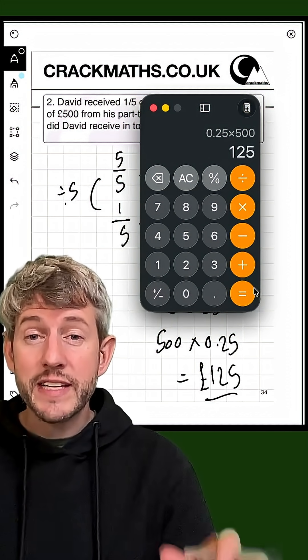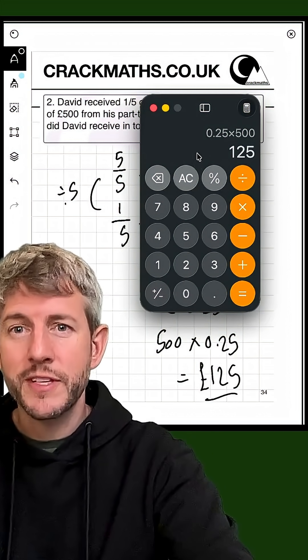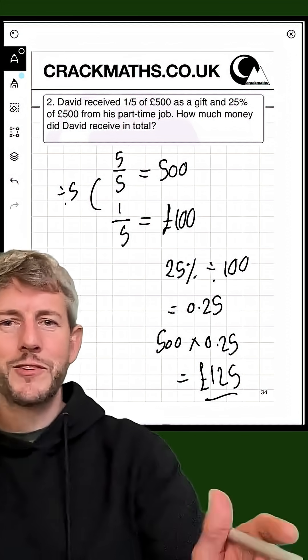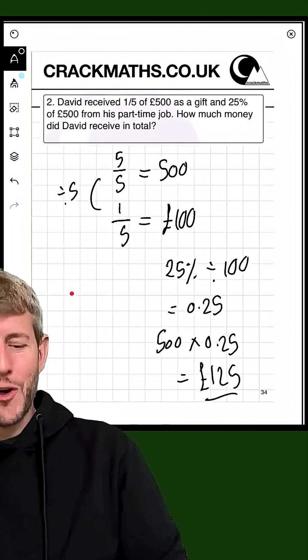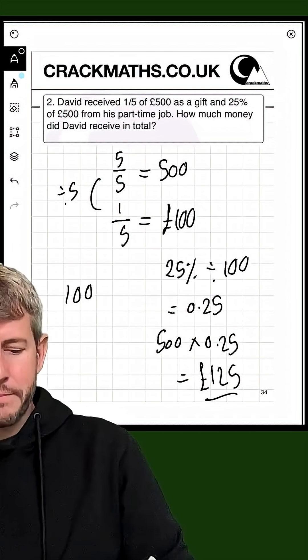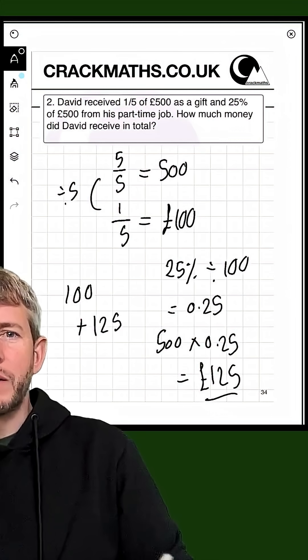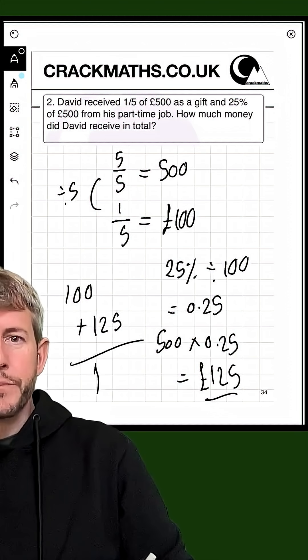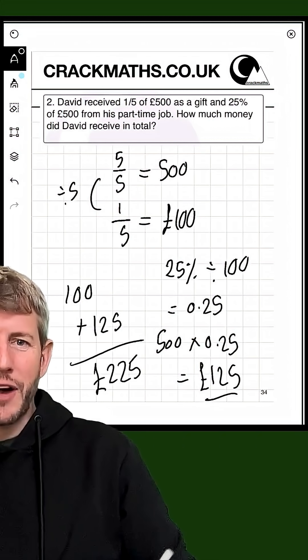Now what I need to do is I just need to add the two amounts together. So here we go. I'll just lean over here. So we've got 100 pounds, add 125 pounds, and that will equal 225 pounds.